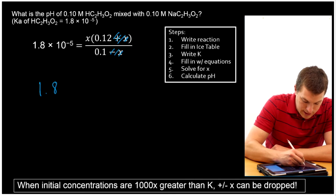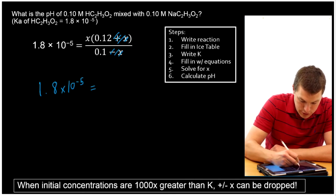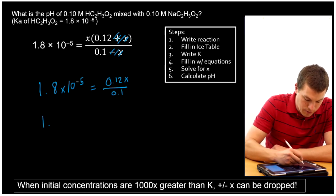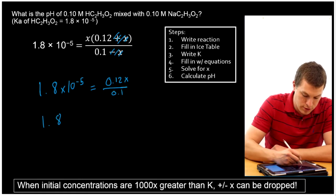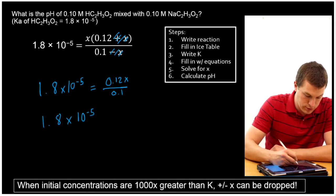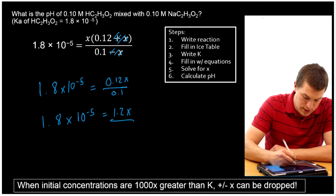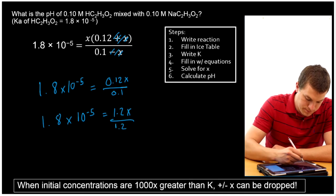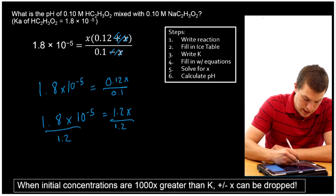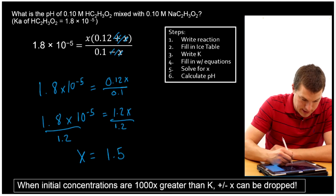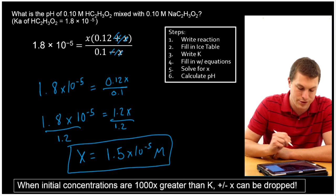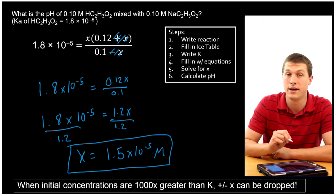That simplifies my algebra a lot. Then I get 1.8 times 10 to the minus 5 equals 0.12X over 0.1. And then when I divide 0.12 by 0.1, I get that it's equal to 1.2X. Now to solve for X, all I have to do is divide both sides by 1.2. And I'm going to get that X is equal to 1.5 times 10 to the minus 5. And the units of that are molar because remember we're solving for concentration.